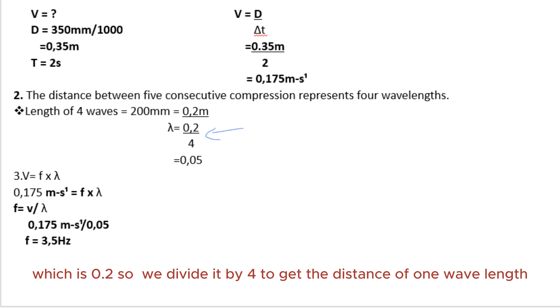For number three, the frequency. We have V, which is 0.175m/s that we calculated. We're looking for the frequency - we don't know the frequency. But we have the wavelength, which is 0.05m. So using f = V/λ, we get f = 0.175m/s ÷ 0.05m = 3.5 Hz.